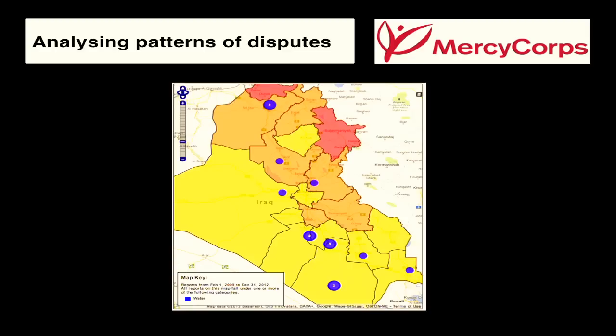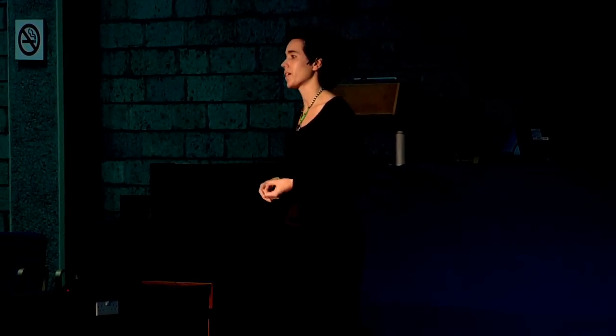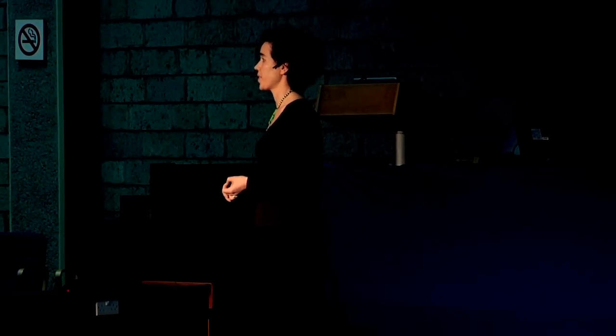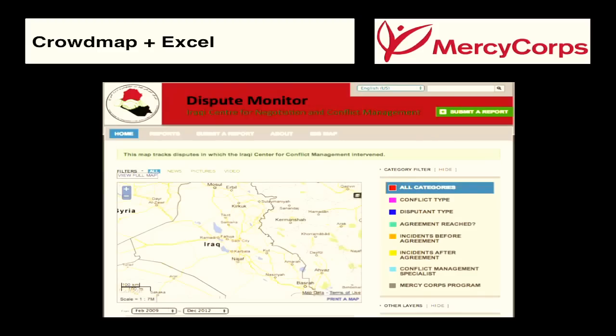What you're seeing here is a map of Iraq. The dots are the disputes in which they intervened that related to water issues. The background layer shows the areas with the greatest water scarcity — red means more scarce. Very quickly, this showed them that the water disputes they were intervening in weren't happening in the places with the greatest water scarcity. Scarcity wasn't the issue coming up in the water disputes — it was access.